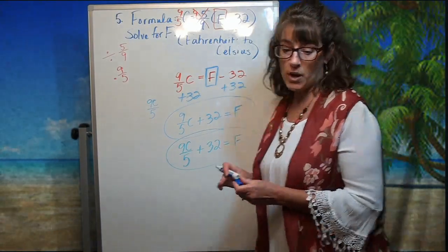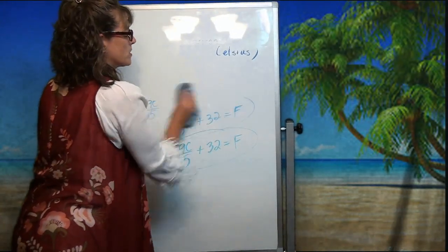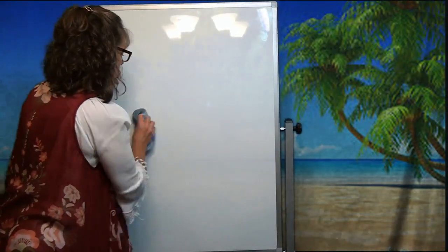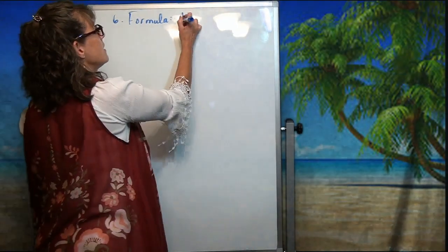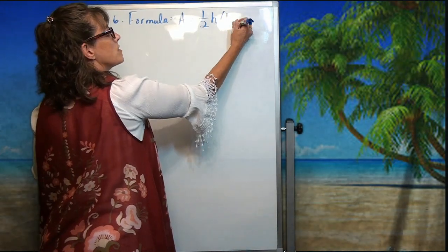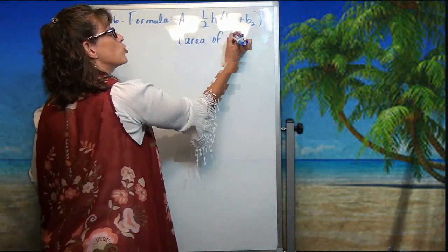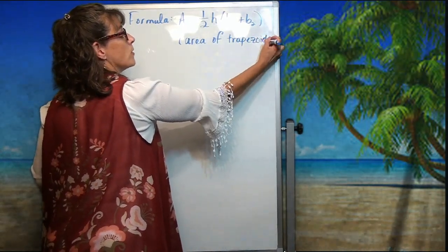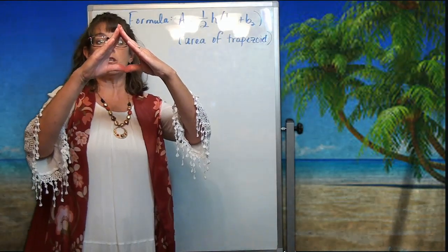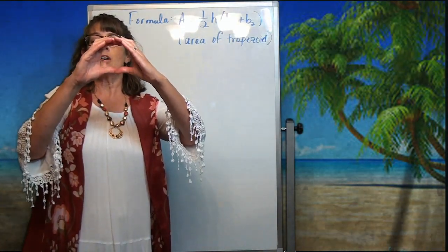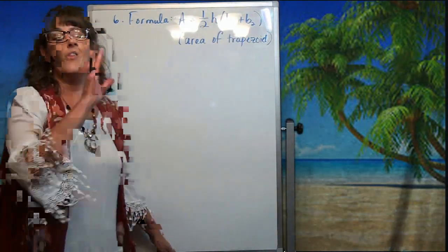One last one — this is a challenging one that throws people off. This formula says A equals one-half H times the quantity B1 plus B2, which is the formula for the area of a trapezoid. It's similar to the triangle formula, but because a trapezoid has two bases, we add them together first. What's important is that we want to solve for B1.